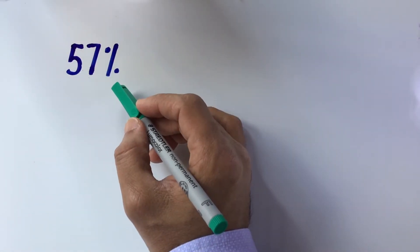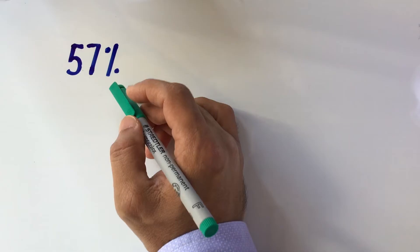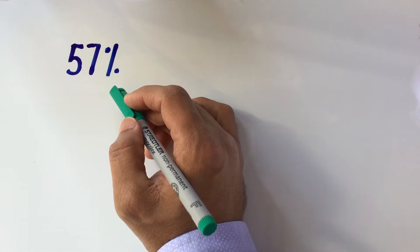In this example, we have to convert 57% into a decimal. Since 57% is less than 100%, we know for sure that the decimal form of 57% will be less than 1.